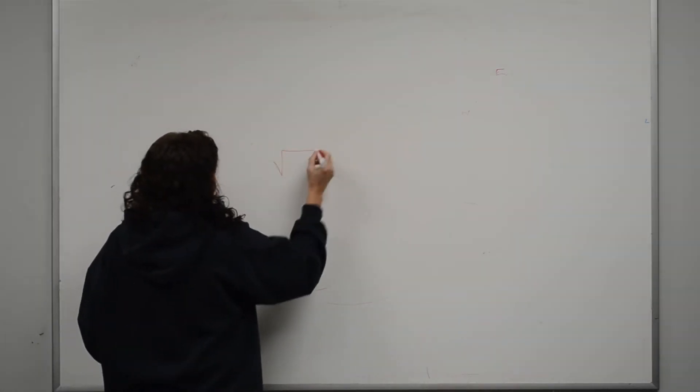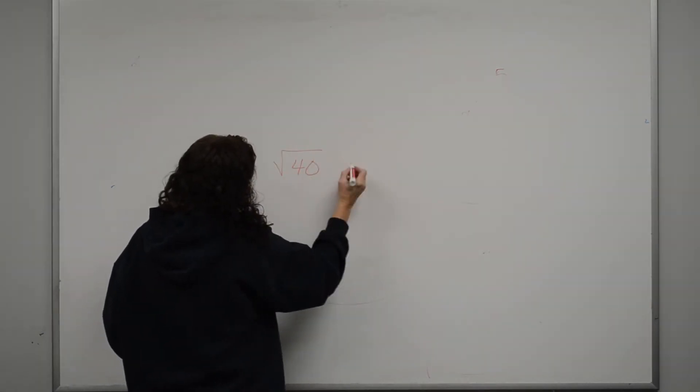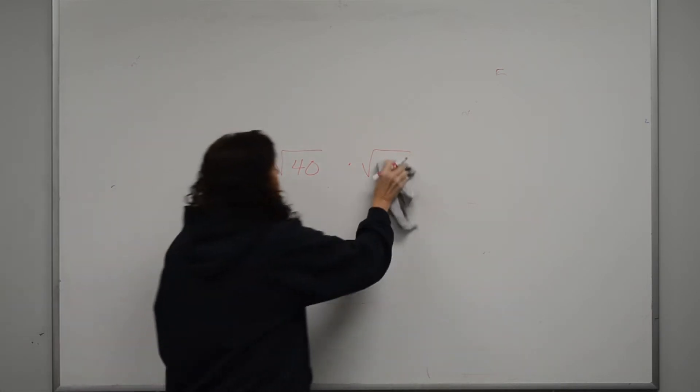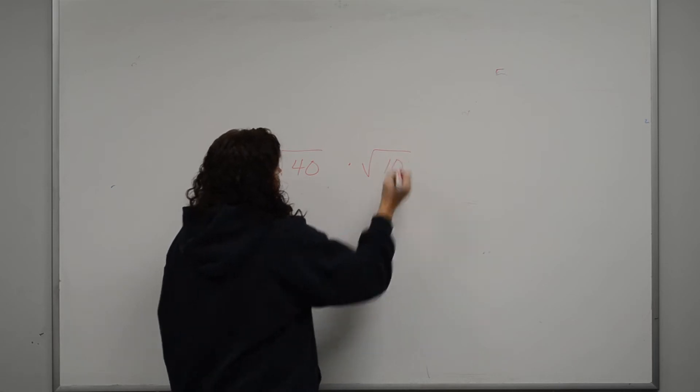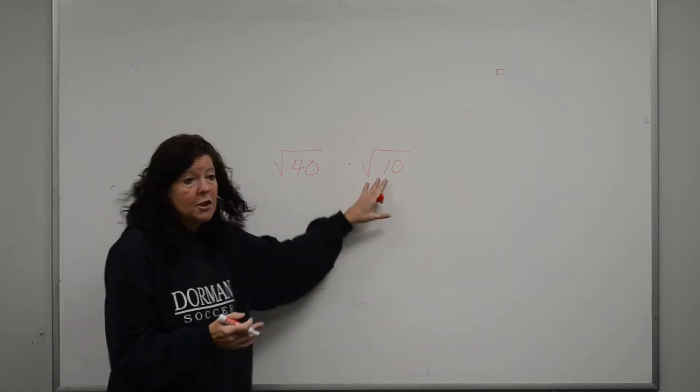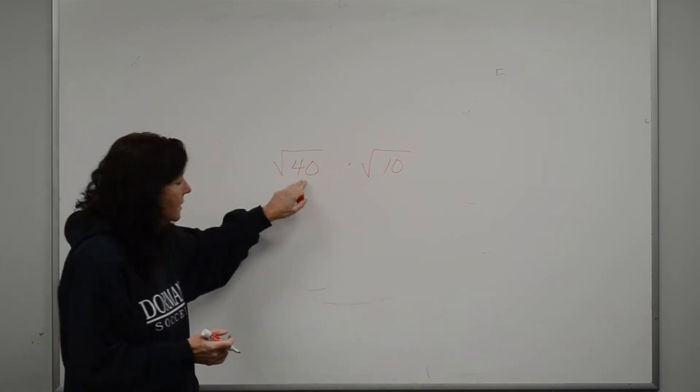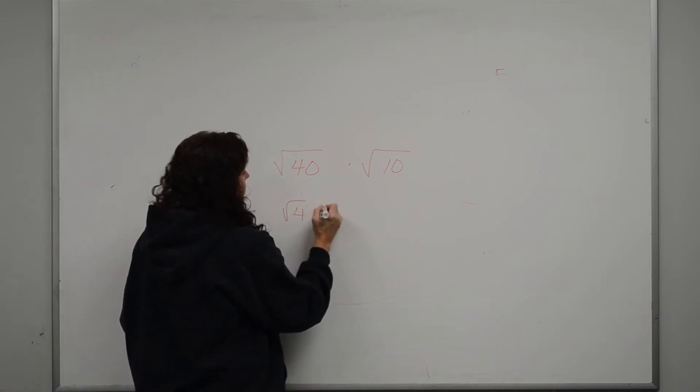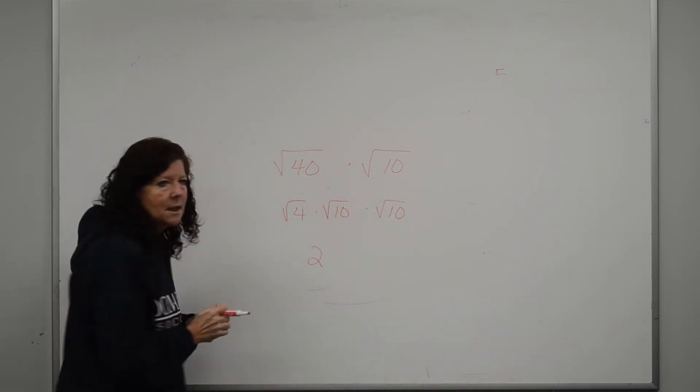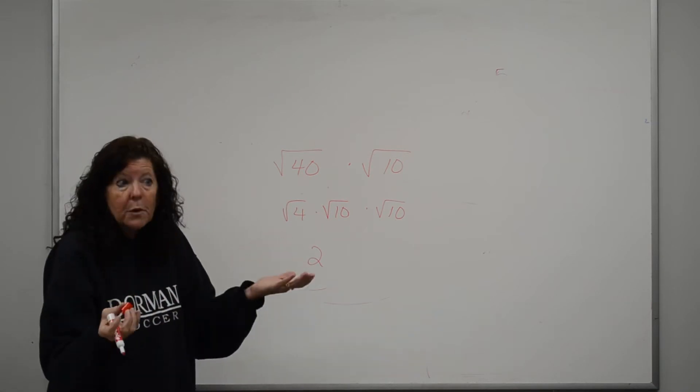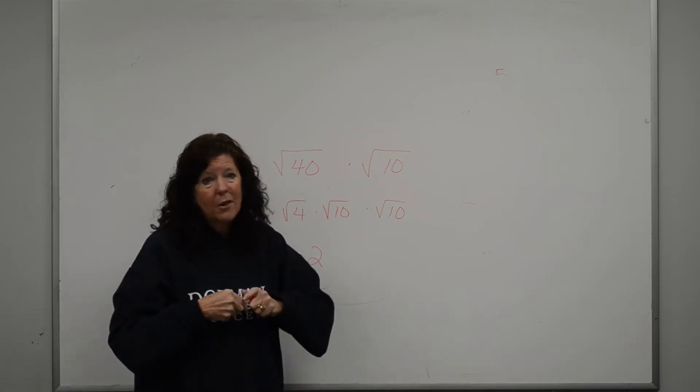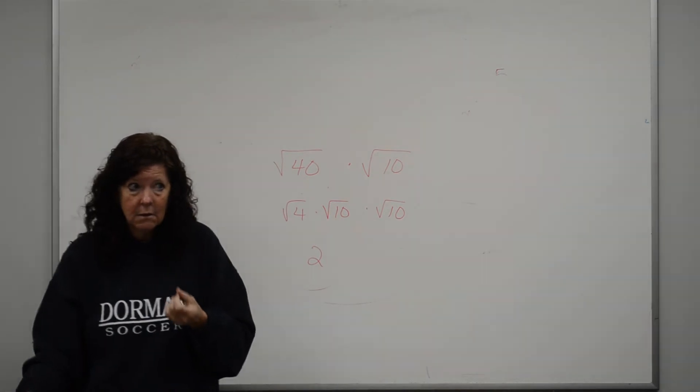You might want to reduce it first. Let's say I have 40 times the square root of, I don't know, 9. Okay. Well, now I want to do something that comes out even. 10. Okay. Square root of 10. Let's say I want to do this first. And I go, I can either do the square root of 400, or I can break this first one down into the square root of 4 times the square root of 10. Well, what's the square root of 4? 2. What's the square root of 10 times the square root of 10? 100. Okay. Square root of 100, which would be 10. So my answer is going to be 20. Okay. So you can break it down first, or you can multiply it first. Y'all with me?